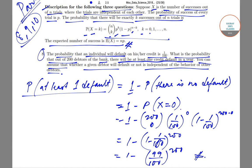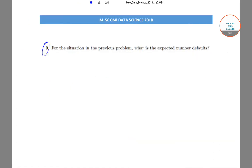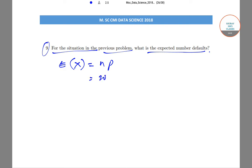Now moving to question number 9: given the same situation from the previous problem, what is the expected number of defaults? Since E(X) = NP, with N = 200 and P = 1/100, the expected number of defaults is 200 × (1/100) = 2. So we can expect two defaults from the 200 debtors.